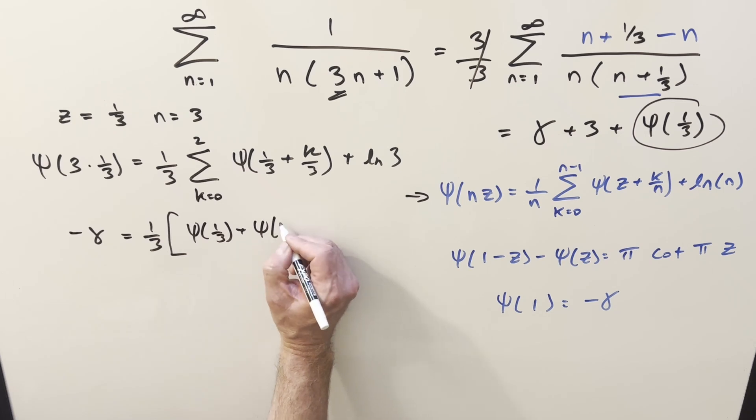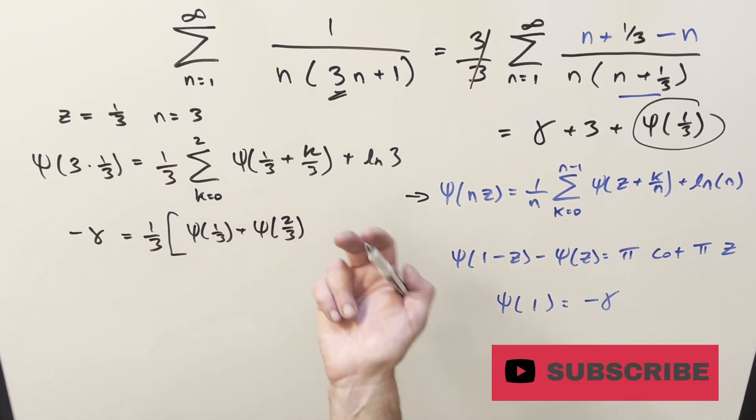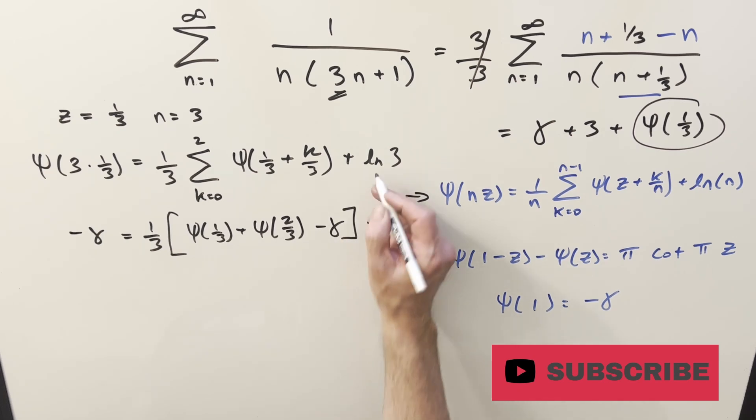The second one, digamma of 2 thirds, when k is 1. And when k is 2, you get digamma of 1, but we know what that is. That's minus the constant. And then we just have this ln 3.